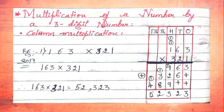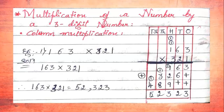After getting all partial products, we add them. In ones place: 3. In tens place: 6 + 6 = 12, write 2 carry 1. In hundreds place: 1 + 2 + 9 + carry 1 = 13, write 3 carry 1. In thousands place: 3 + 8 + carry 1 = 12, write 2 carry 1.